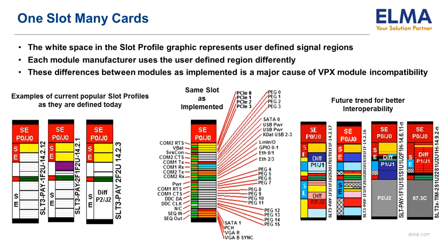Having undefined areas in a slot profile has made it difficult for system integrators to second-source, because backplanes end up being wired for one specific card. The four slot profiles on the right, however, are examples of where the industry is moving. This isn't expected to limit creativity — the cards designed for these new slots can have lots of unique internal capability. This approach just requires that they assign common backplane signals in the same way.